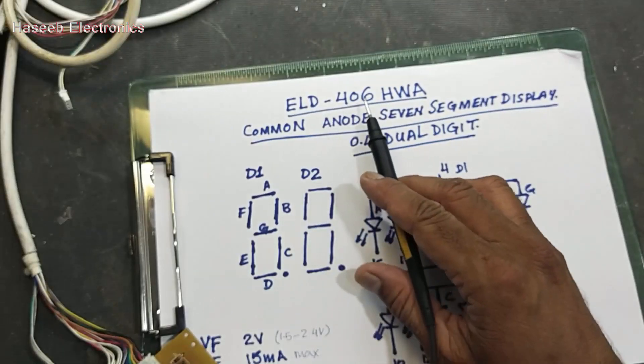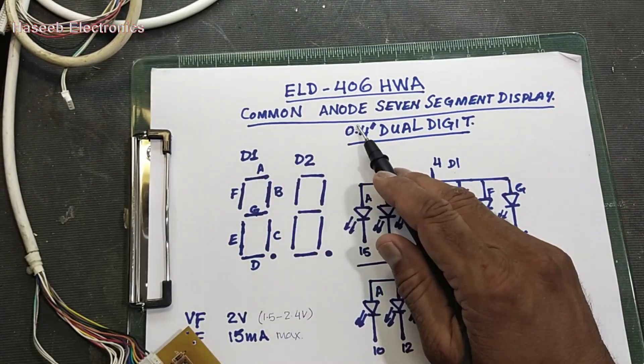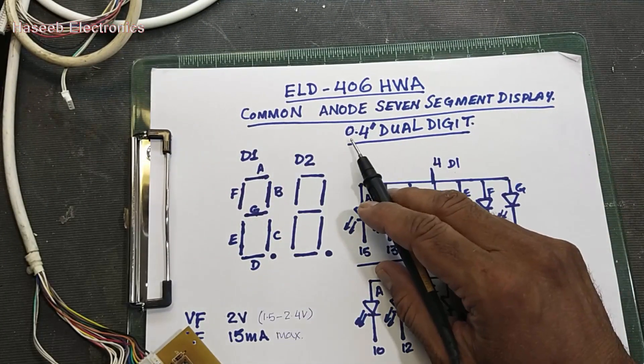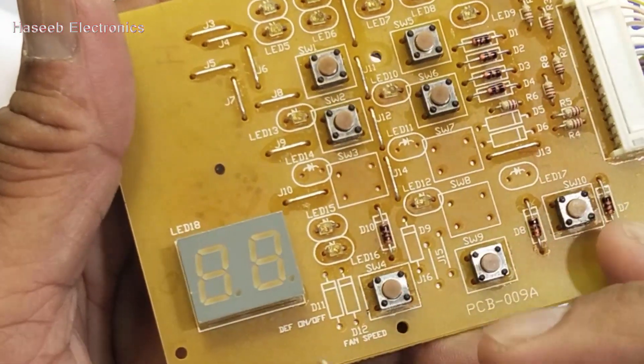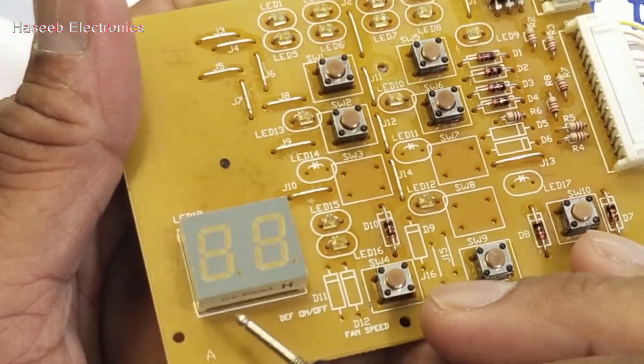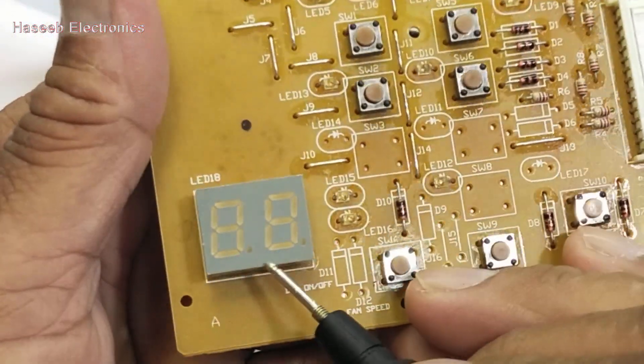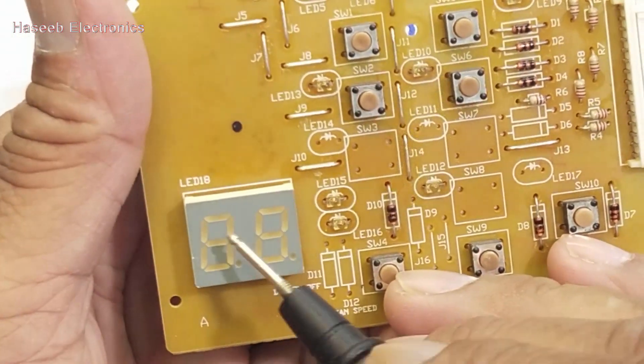ELD-406HWA is a common anode seven segment display, 0.4 inch dual digit. If we place it this way, the dots are here and the part number is written here. The main indication is that dot is here.